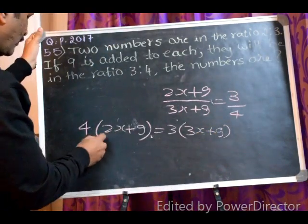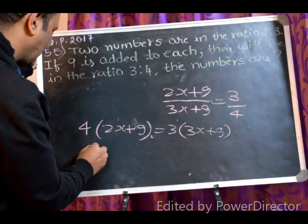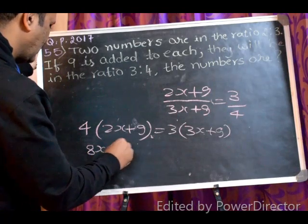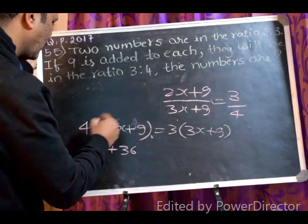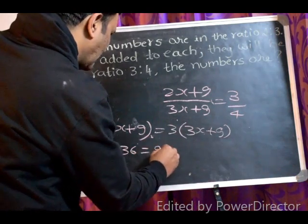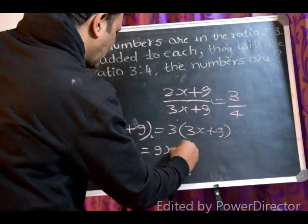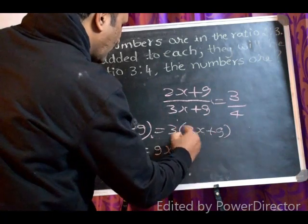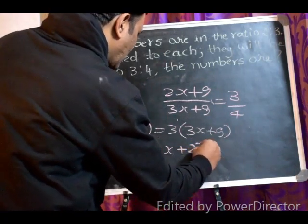Now, 4 into 2, 8x plus 36, 9 into 4, 36 is equal to 3 into 3, 9x plus 9 into 3, 27.